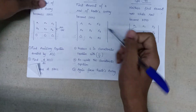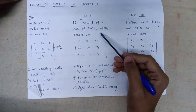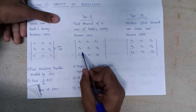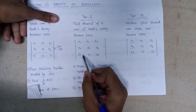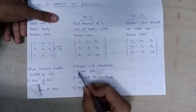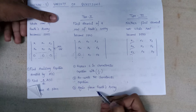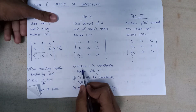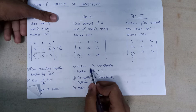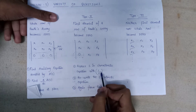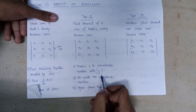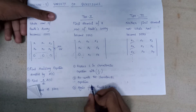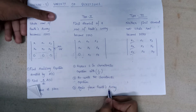In Type 2 questions the first element becomes 0, so we follow these steps: first, replace s in the characteristic equation with 1/z; after that, rewrite the characteristic equation; and then again form the Routh array.